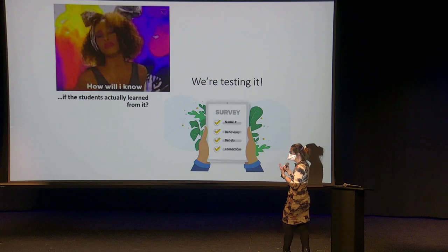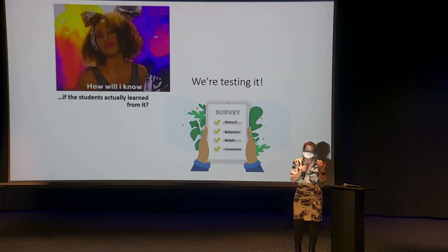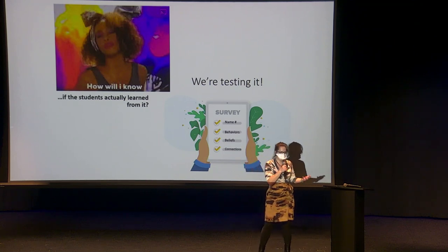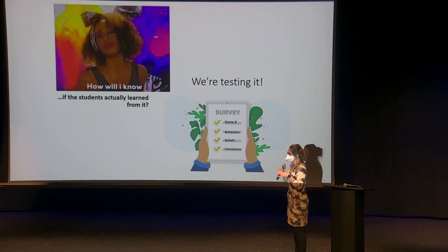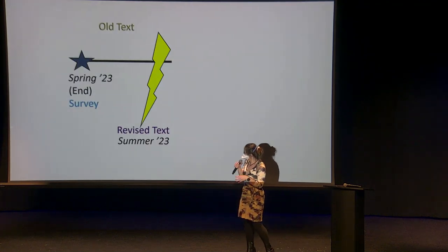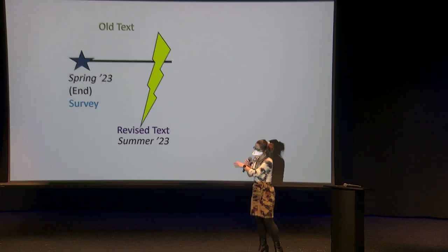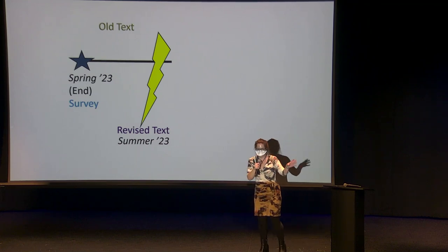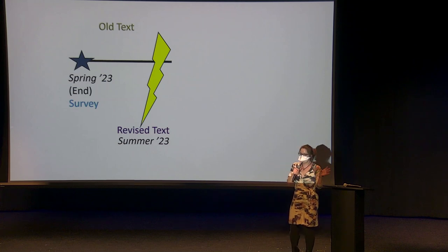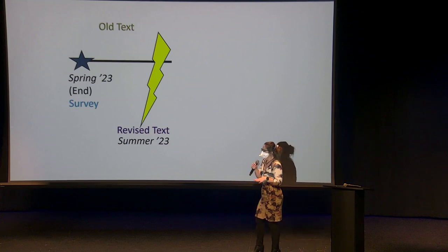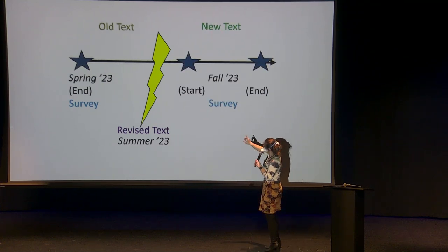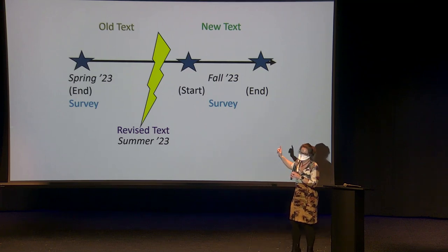We're in the middle of testing whether students are actually learning from it. We have a survey that asks them to name the SDGs, identify behaviors related to those SDGs, share their beliefs, and make connections to their eventual careers. We started this in spring 2023, implemented the survey with the old textbook, and then in summer 2023 revised the text to make all the SDGs explicit. In fall, we surveyed students before they even saw the new textbook.